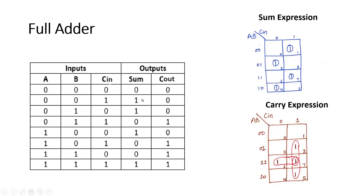Now, depending on wherever the sum bit is high, I have written all the possible combinations here. At one, sum is one so I have written one here; at two, sum is one so I have written one here; again at four, sum is high so I have written one here. As per the Karnaugh map, we can derive the expressions. There is no overlapping ones, so there will be four terms in the sum expression.